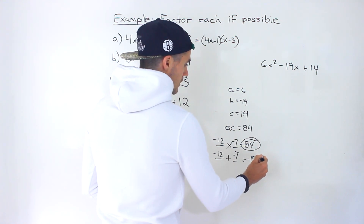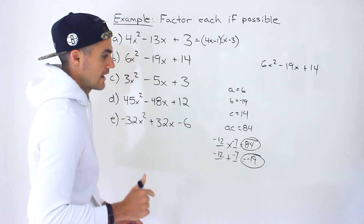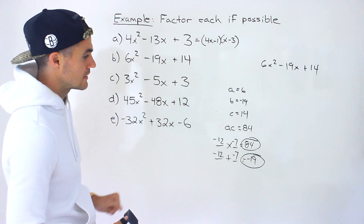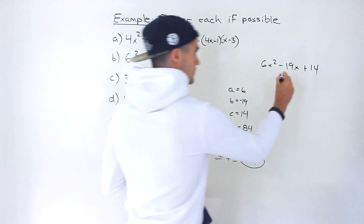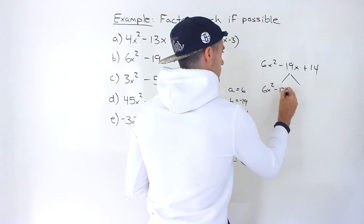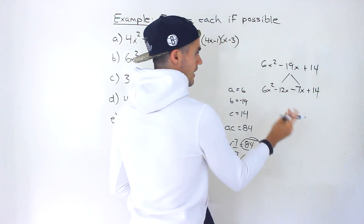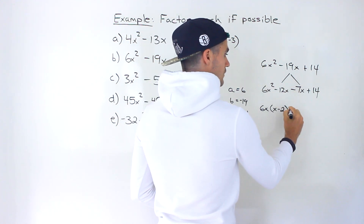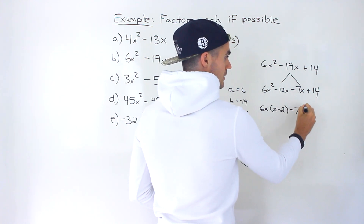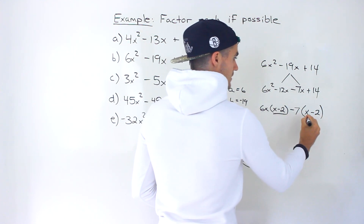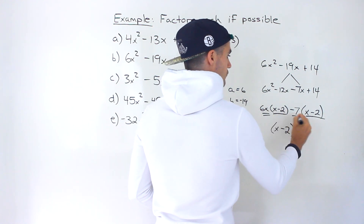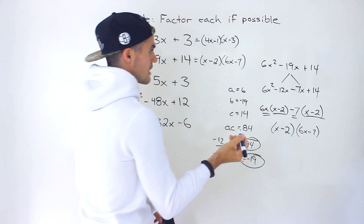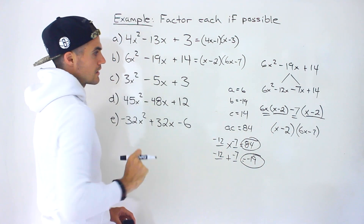Whenever you're searching for two numbers that multiply to a positive value and add up to a negative one, both numbers will be negative — that's the common pattern when B is negative and C is positive. Decomposing the middle term gives 6x² minus 12x minus 7x plus 14. Take out 6x from the first pair to get x minus 2, then take out negative 7 from the second pair, also giving x minus 2. Take out the common factor to get (x minus 2)(6x minus 7).